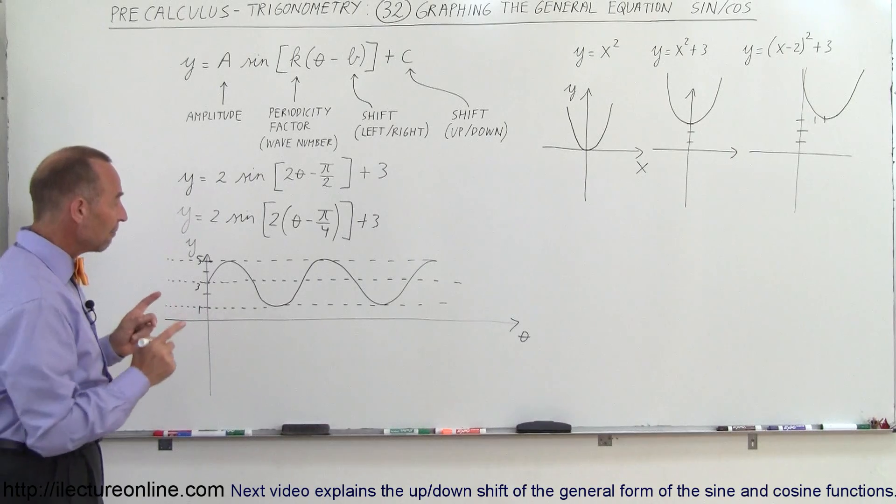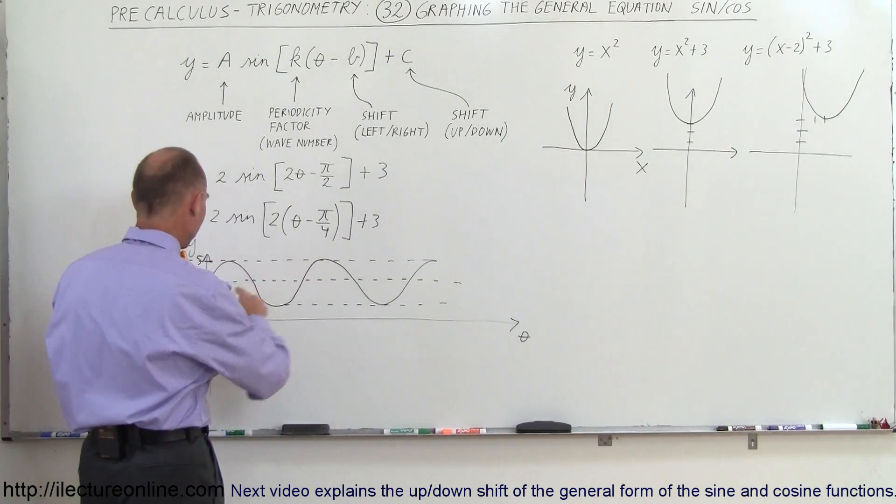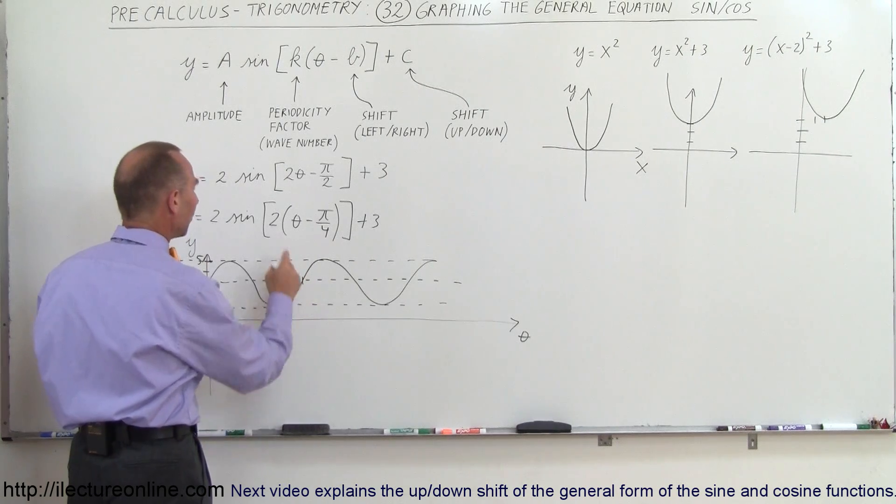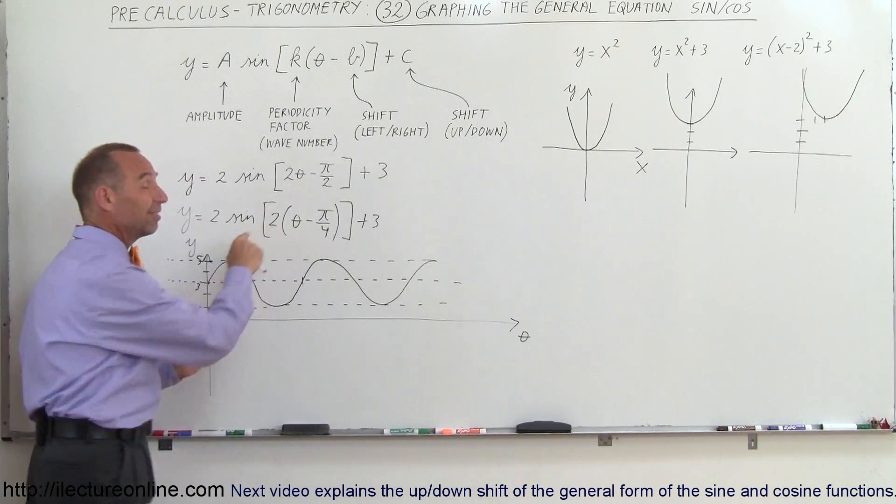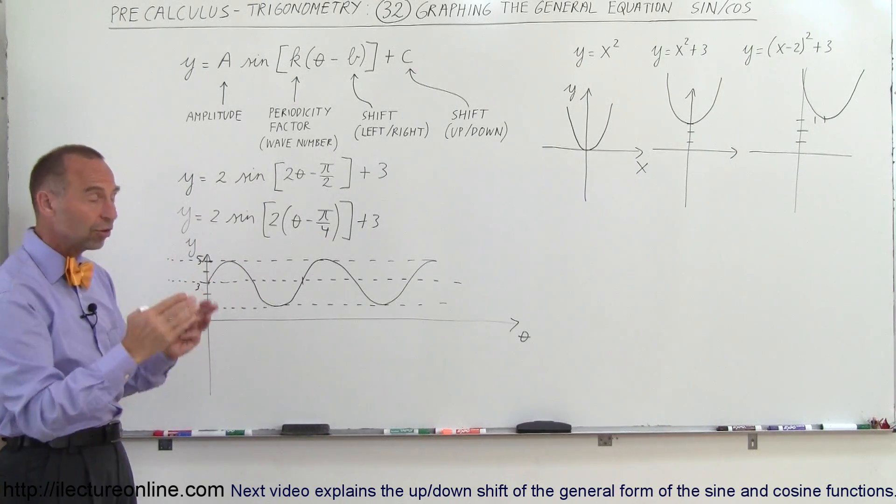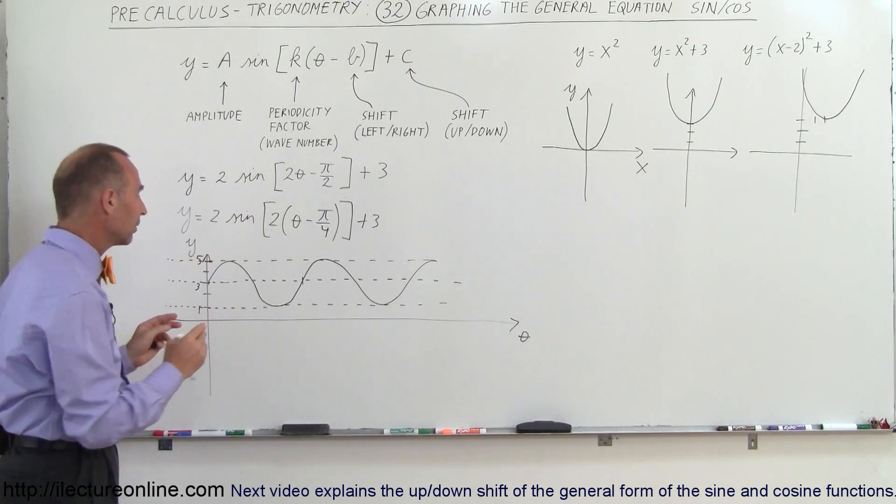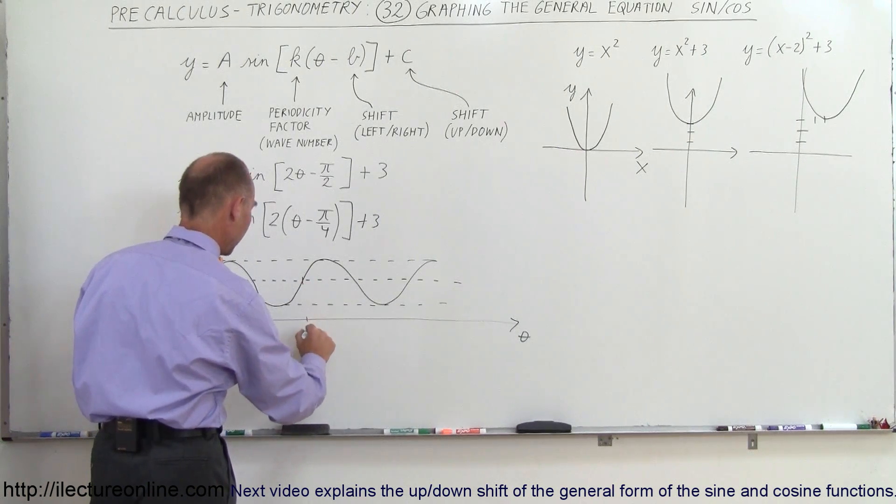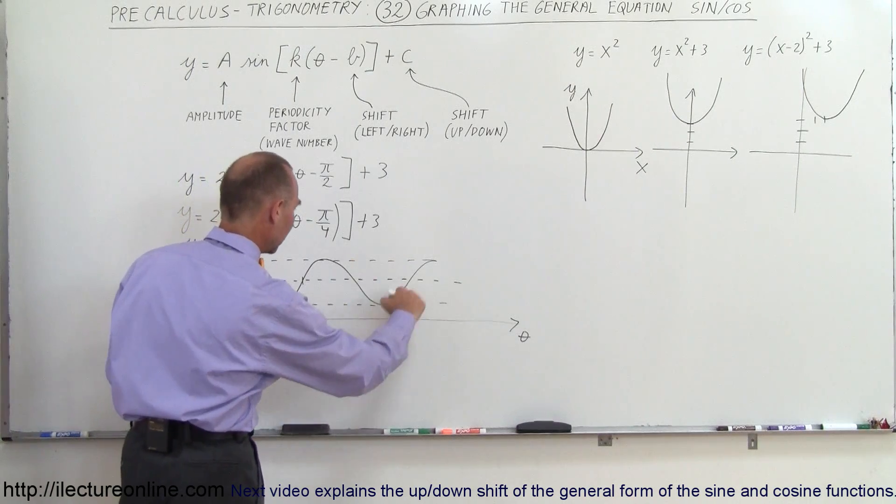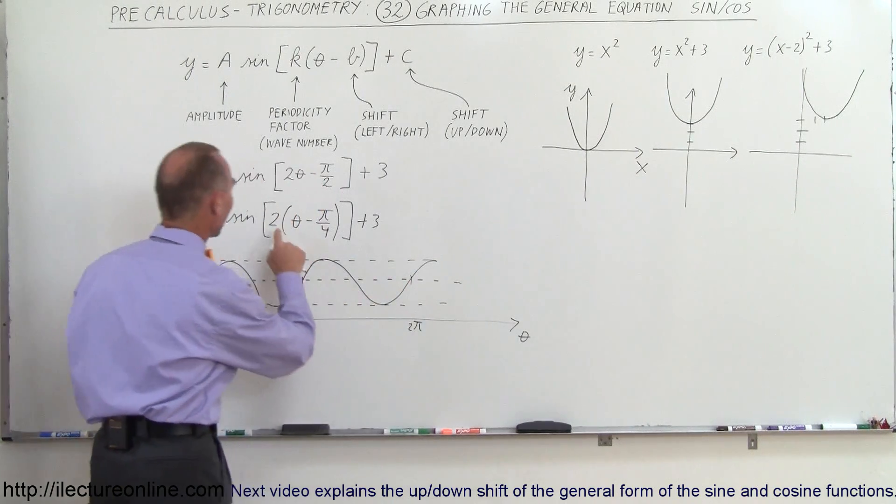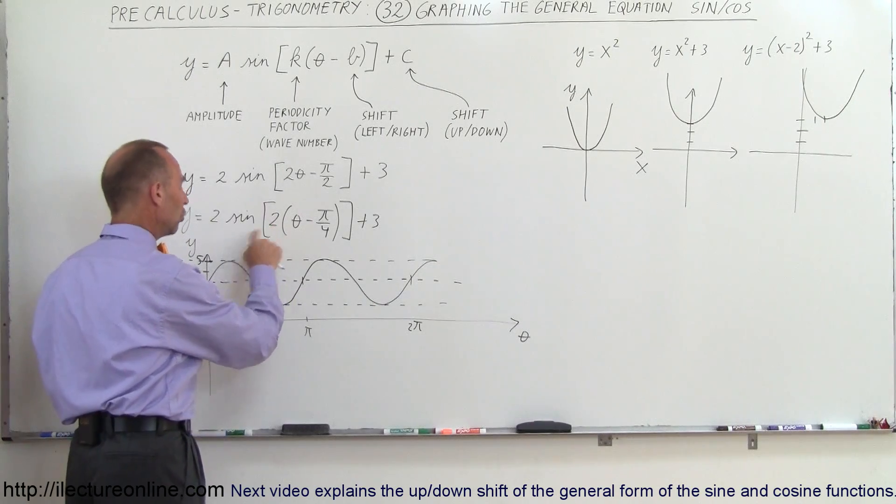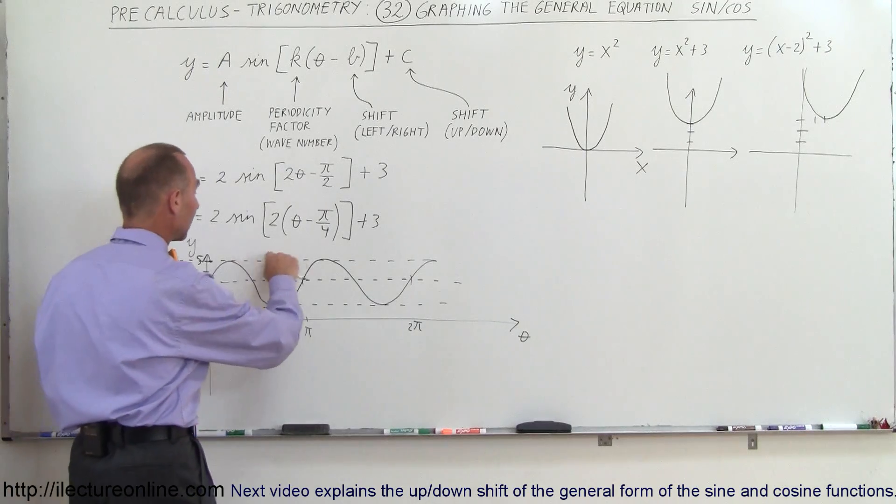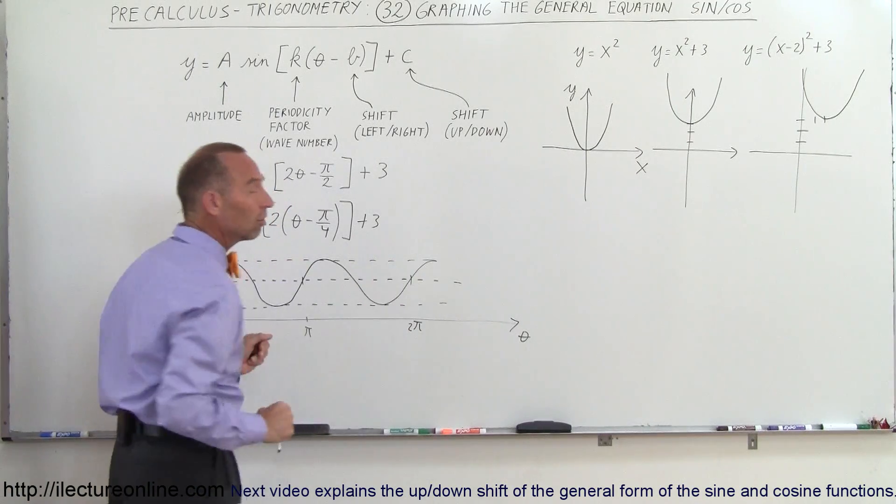Okay normally the full function, the full wave like this going from there to there, would be one period and that would be equal to 2π. But since we have a 2 here, the periodicity factor is 2, that means we're going to have two complete oscillations in a 2π period. That means in this case one oscillation will be equal to π, so call this here π, and then a second oscillation like this is going to be 2π. So in this case since we have the periodicity factor equal to 2, we're going to have two complete oscillations in the 2π period. Otherwise we would have something that looks like this, a single oscillation in the distance of 2π.